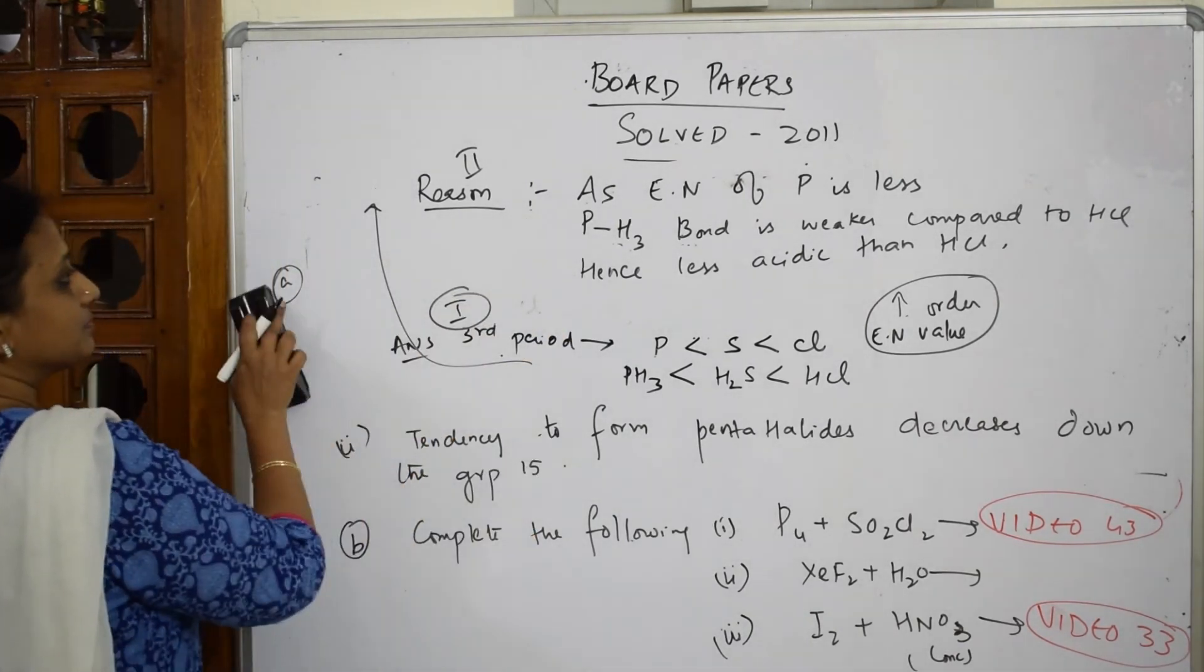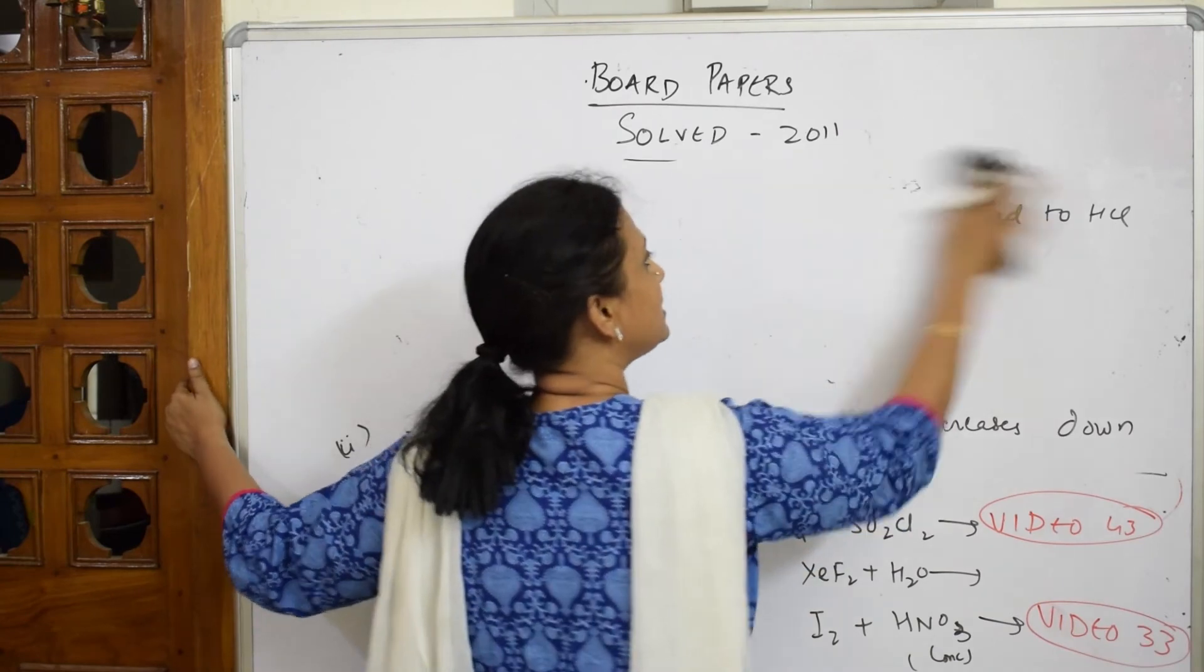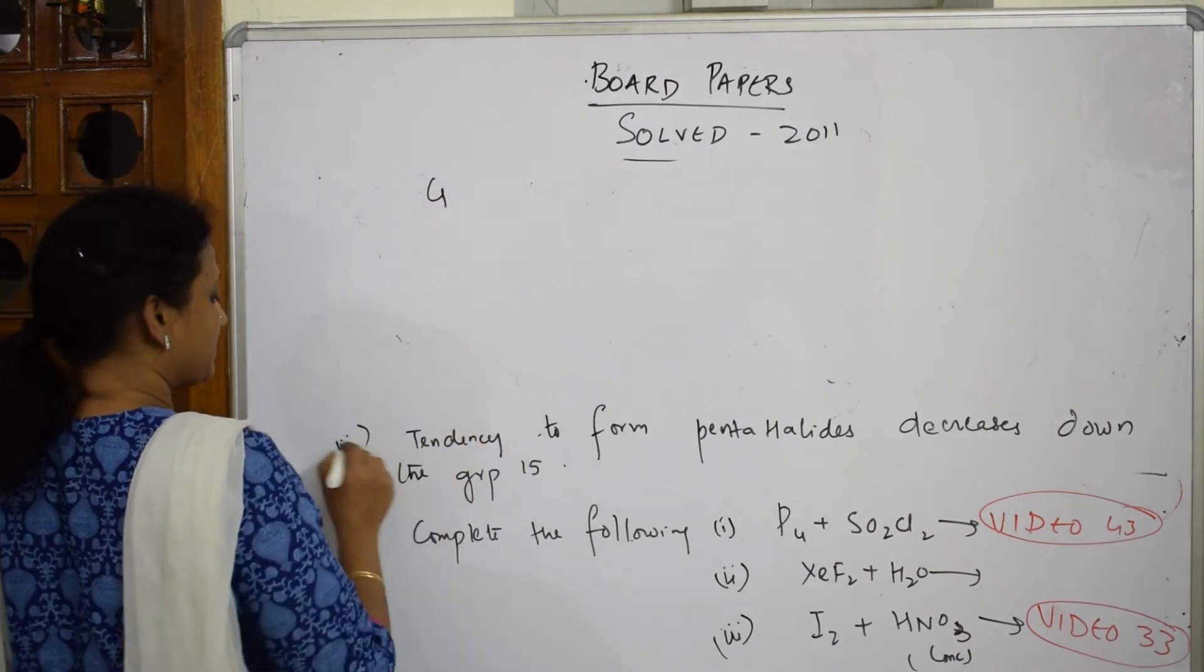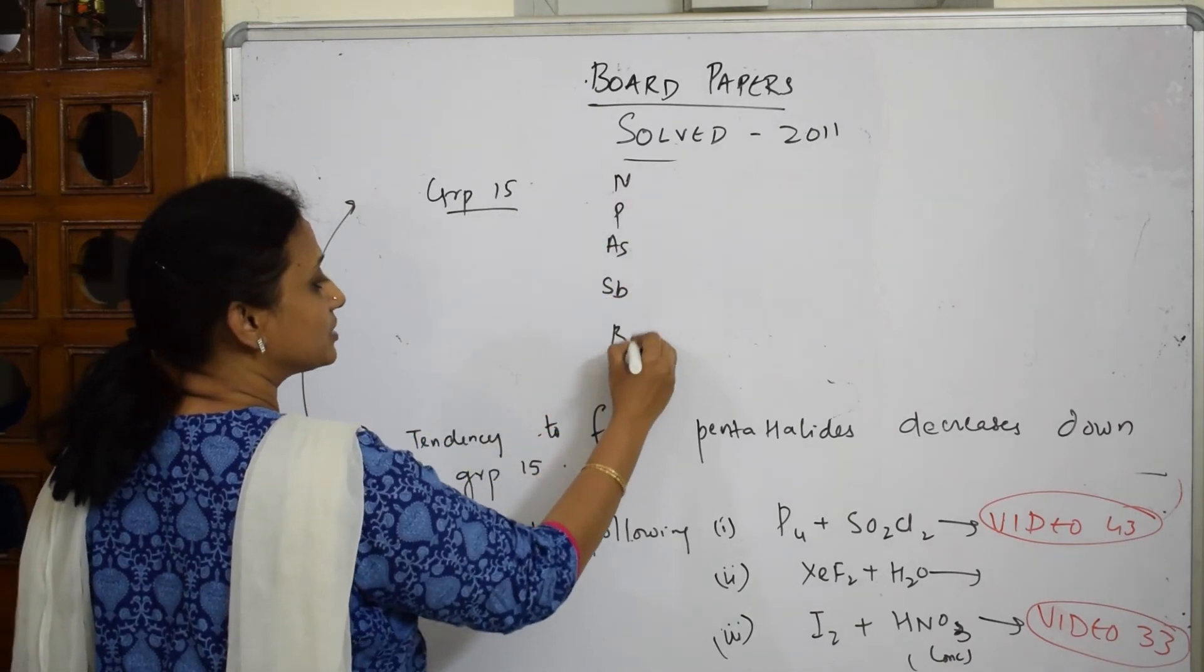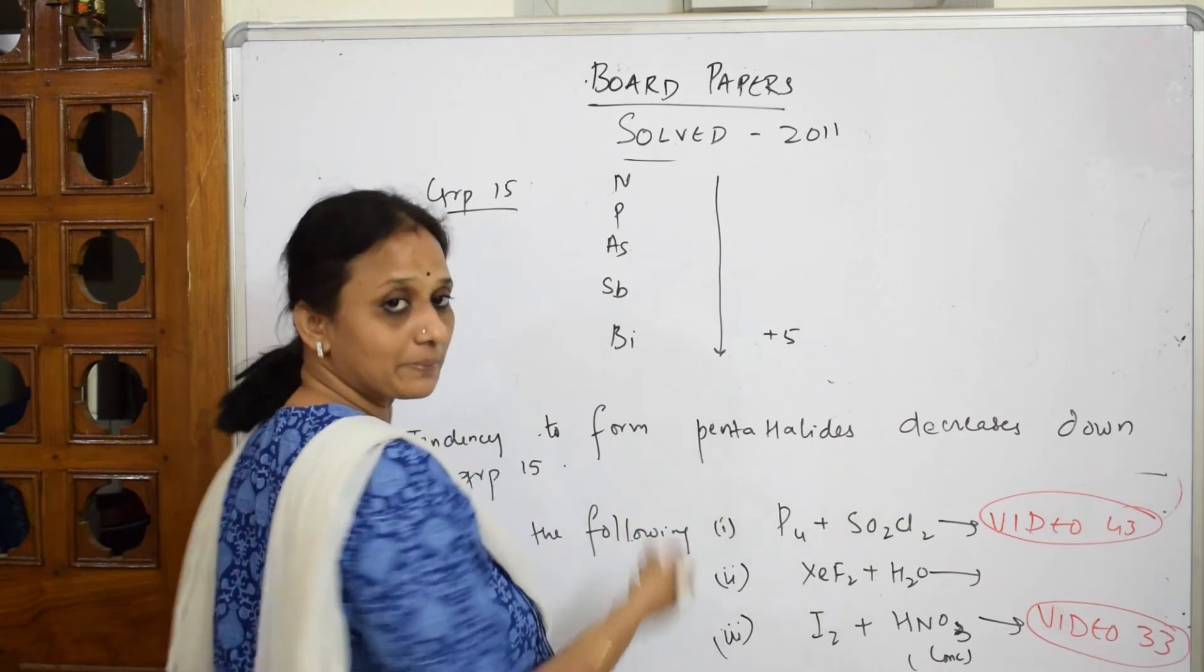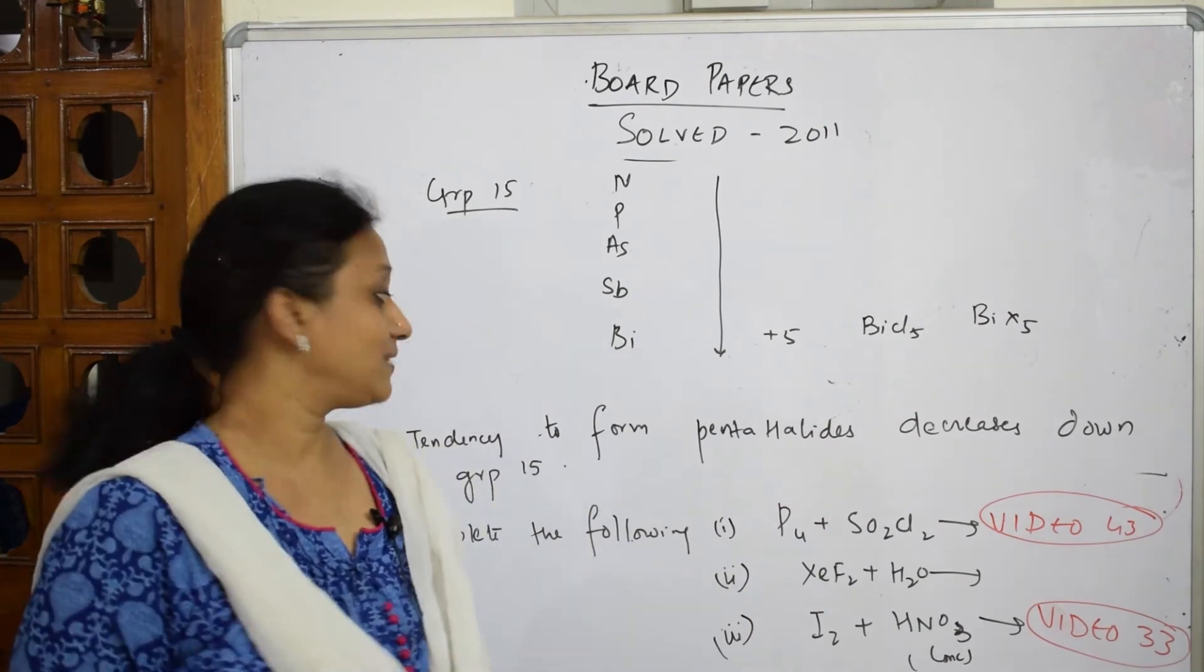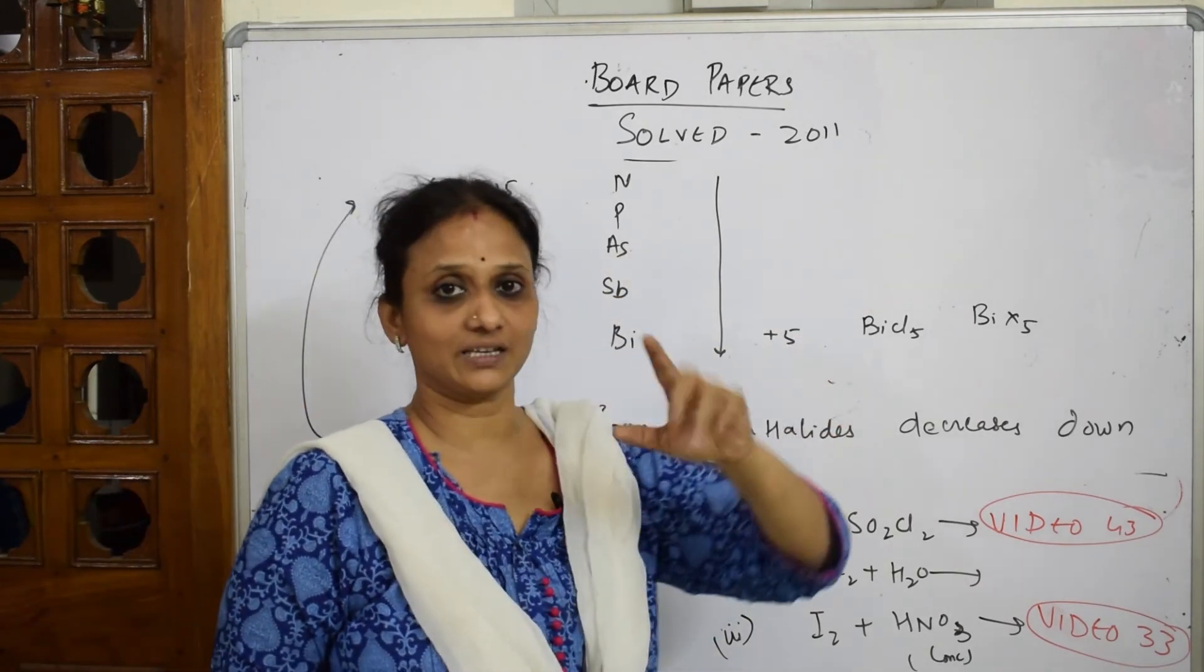Let me erase this and write the next question. They've given: the tendency to form penta halides decreases down the group. Penta halides of group 15. Group 15 elements are nitrogen, phosphorus, arsenic, antimony, and bismuth. They said tendency to form penta halides - when I go down the group, the tendency to show +5 oxidation state, that is penta halides. For example BiCl5 or BiX5 - this is not observed. They're saying why does it decrease?